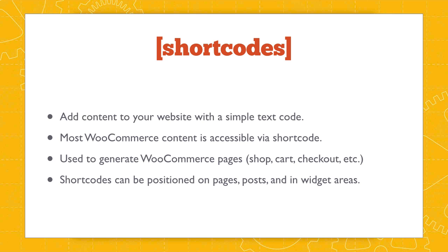You enter a shortcode on a post or a page, and WordPress expands that shortcode into something much more complex. WooCommerce uses shortcodes to generate all of the special pages — the shop page, the shopping cart page, the checkout page, etc. Almost everything we put into WooCommerce is accessible using a shortcode, which means we can position things like product information and category listings on almost any page of our website.